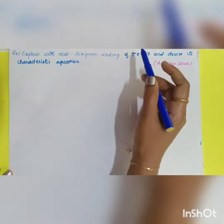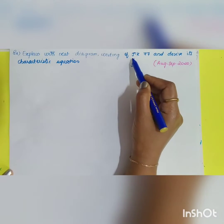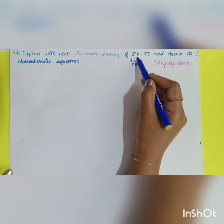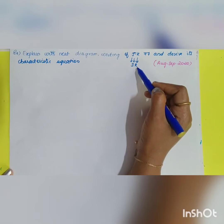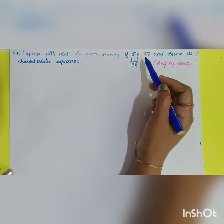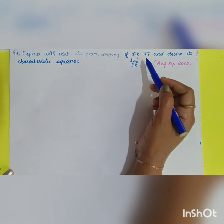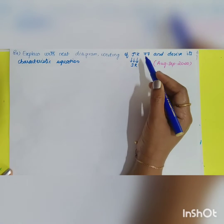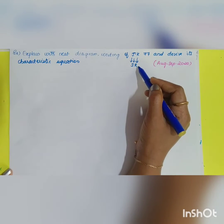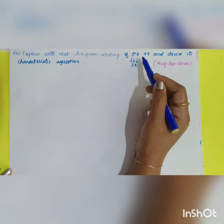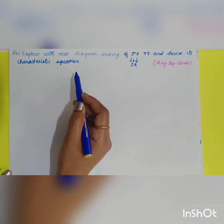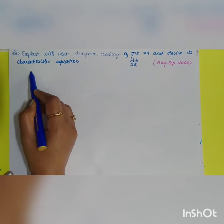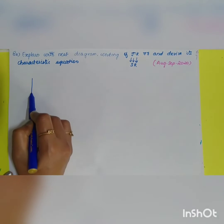The JK flip-flop is a modification of the SR flip-flop, where J is similar to S (set) and K is similar to R (reset). The key modification is in the case where J=1 and K=1: in the SR flip-flop this was undefined, but in the JK flip-flop it is defined as the toggle state. That is the only difference between the JK and SR flip-flop.